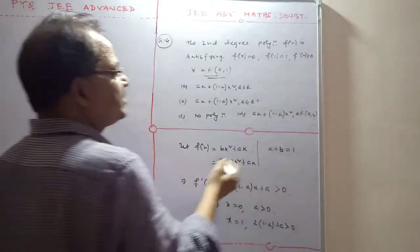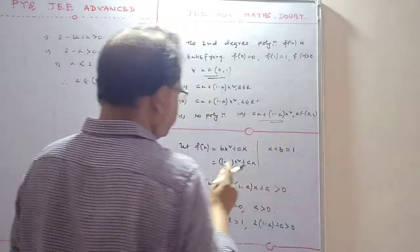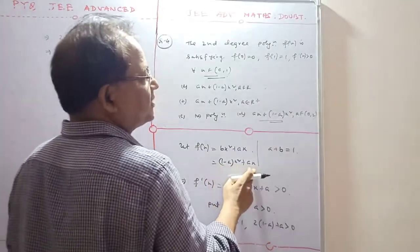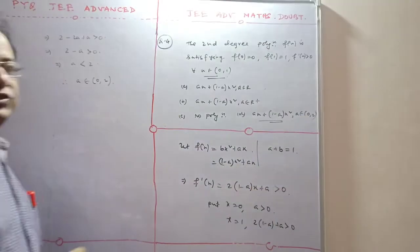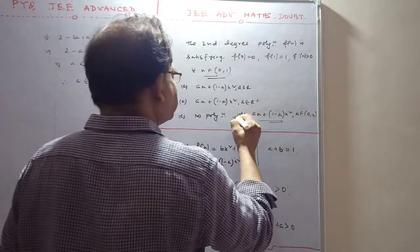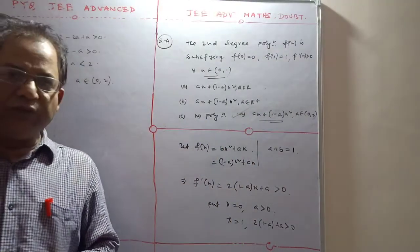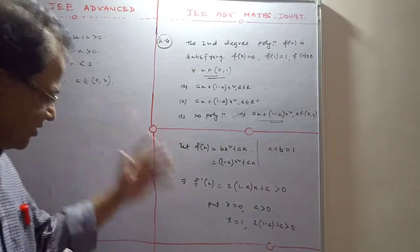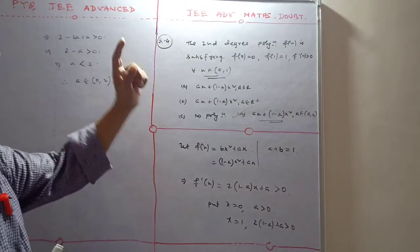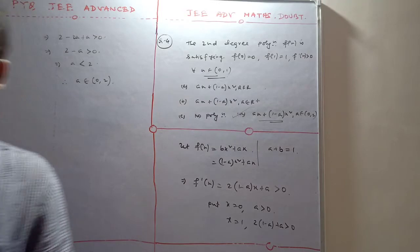So f(x) becomes (1-a)x² + ax where a is between 0 and 2. My dear friends, this is the right answer and the exact solution to this problem. That's all.